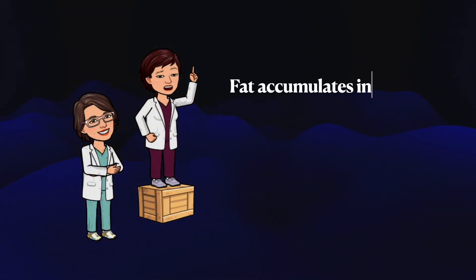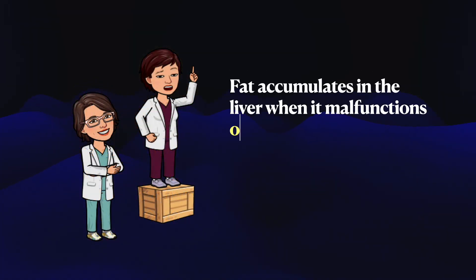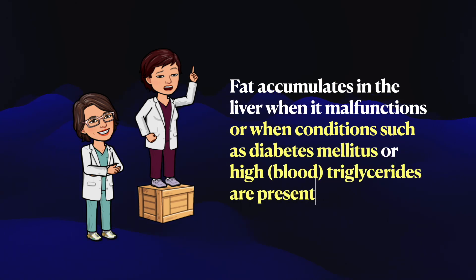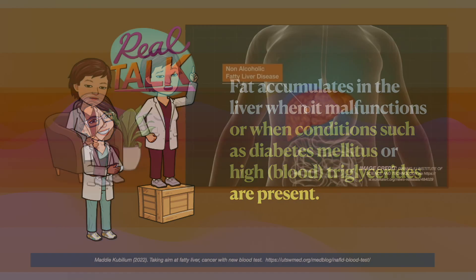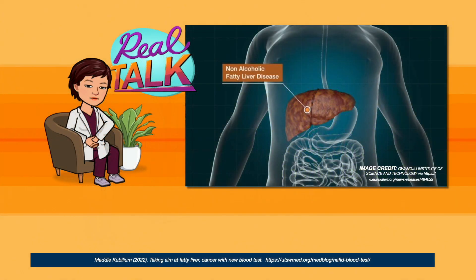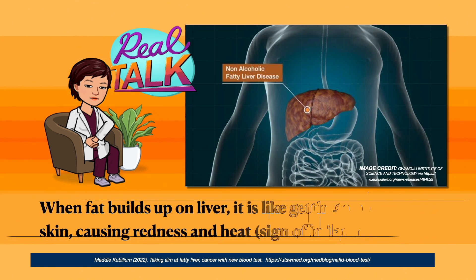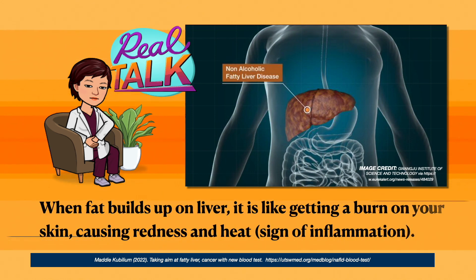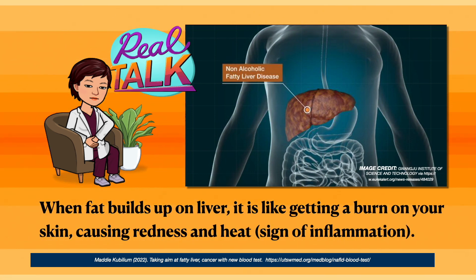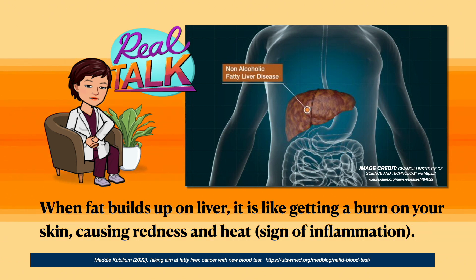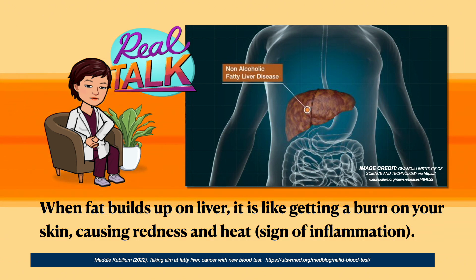Fat accumulates in the liver when it malfunctions, or when conditions such as diabetes mellitus or high triglycerides are present. When fat builds up on the liver, it is like getting a burn on your skin, causing redness and heat — a sign of inflammation.